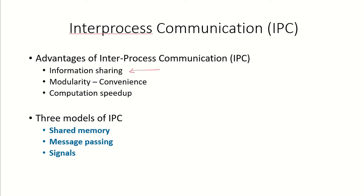The first advantage is information sharing. There might be several processes that want to share some information — like two processes sharing a file, where one process might be writing into that file and the other might be reading from it, or several processes sharing the same database. So how can this information sharing be done?